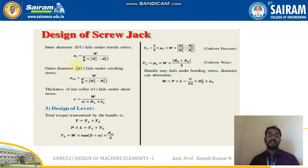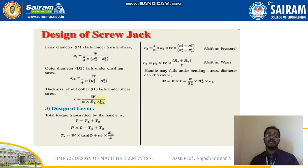The inner diameter D1 fails under tensile stress: σT = W / [(π/4)(D1² − DO²)]. The outer diameter D2 fails under crushing stress: σ_crushing = W / [(π/4)(D2² − DM²)]. The thickness of the nut collar T1 fails under shear stress: τ = W / (π × D1 × T1).